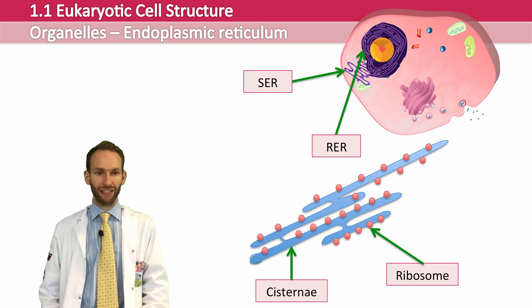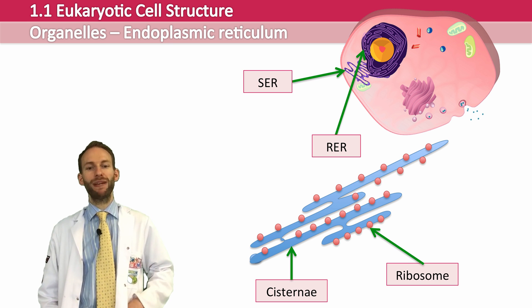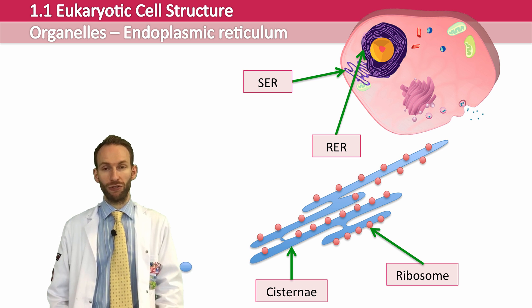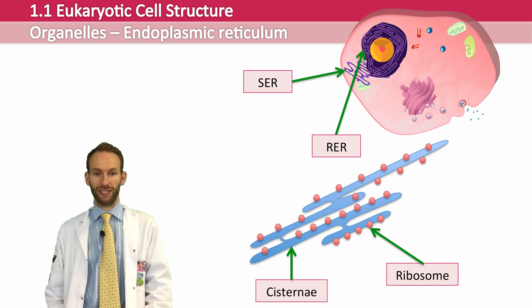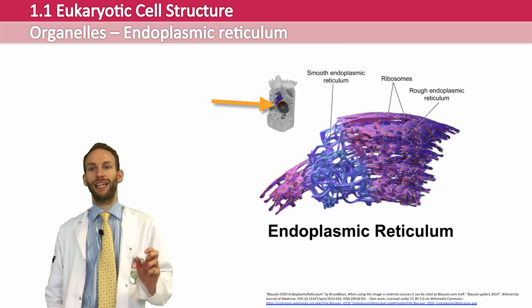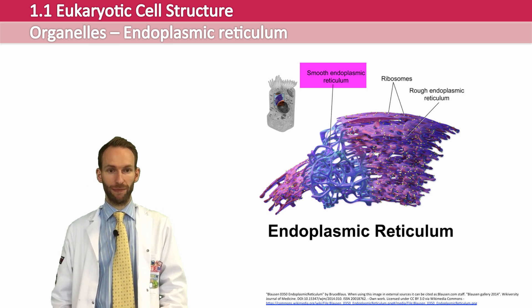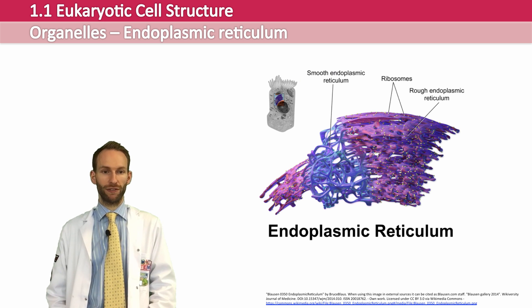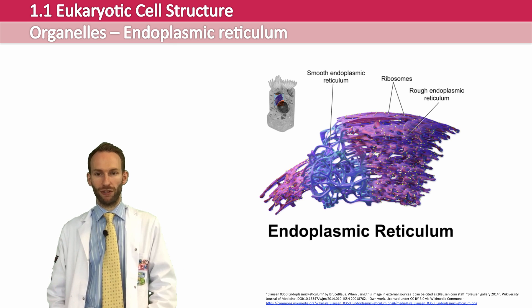Once a protein has been made on an attached ribosome, that piece of membrane can pinch off, form a vesicle, and be transported to the Golgi apparatus for processing. The rough ER is usually found next to the nucleus and is sometimes joined to the nuclear envelope itself. The smooth endoplasmic reticulum manufactures lipids and steroids such as hormones. It has the same structure as rough ER but without the dotted ribosomes on its membrane.